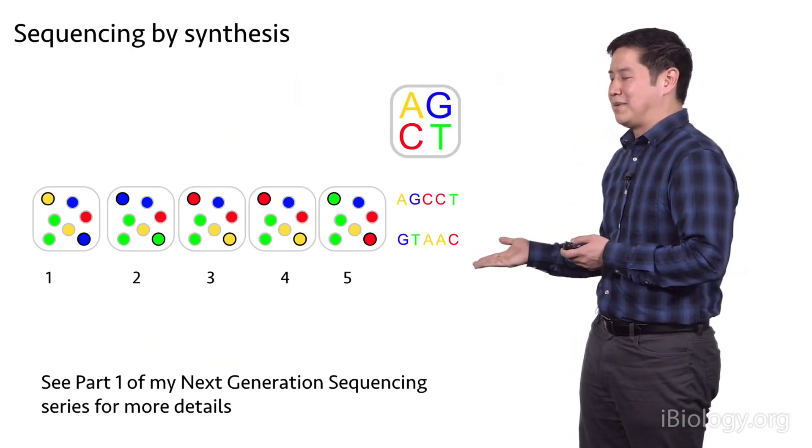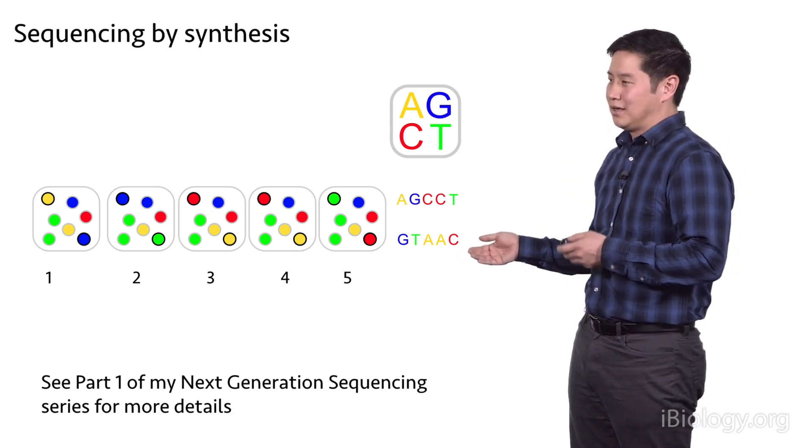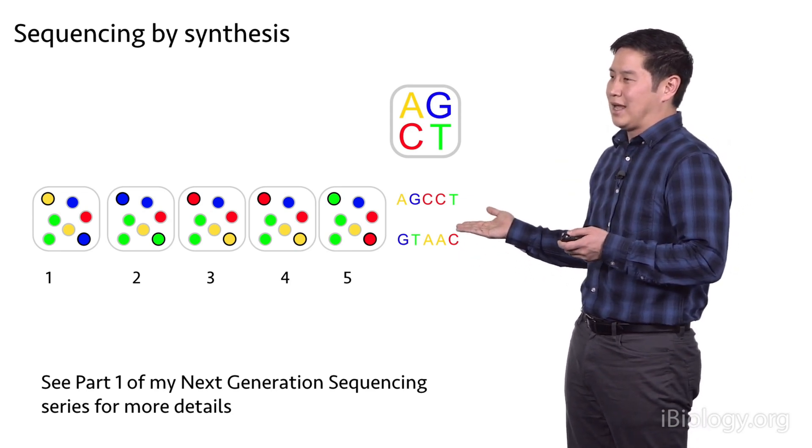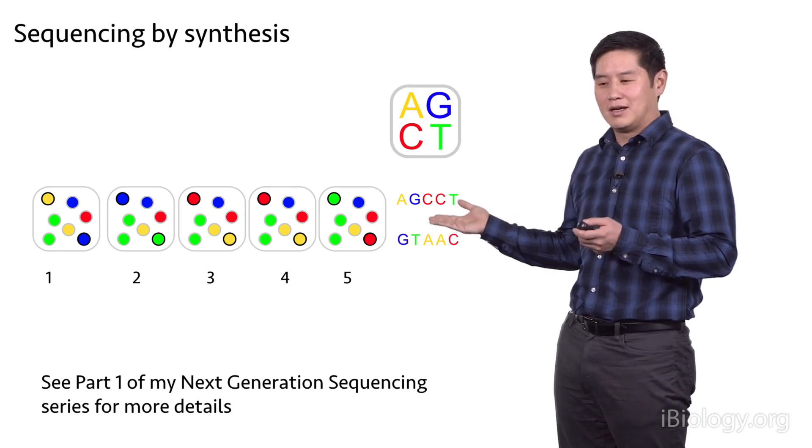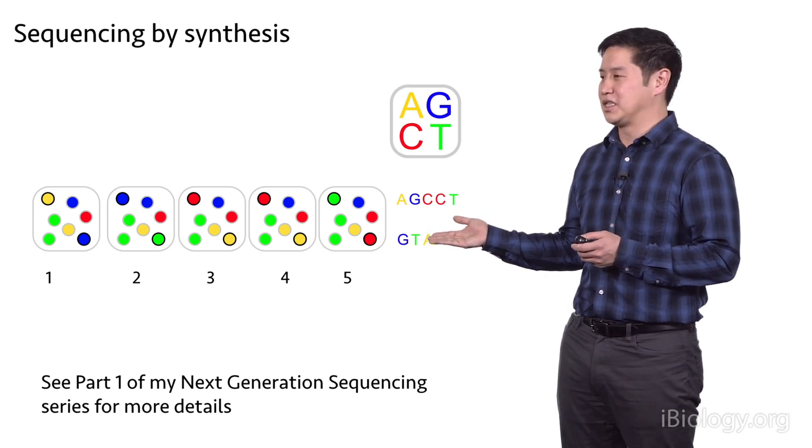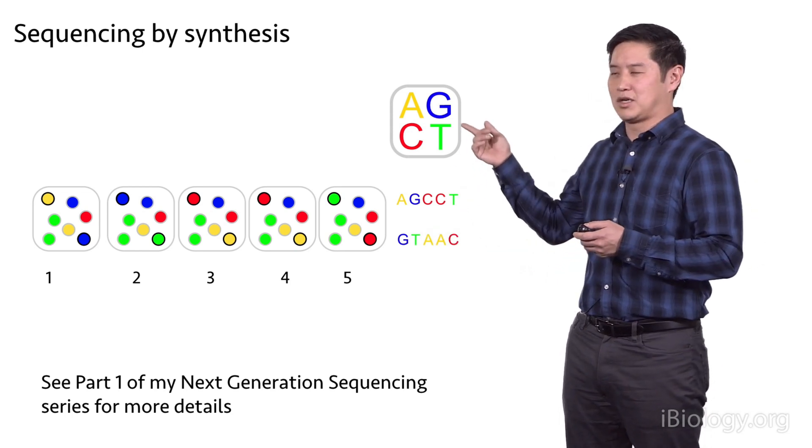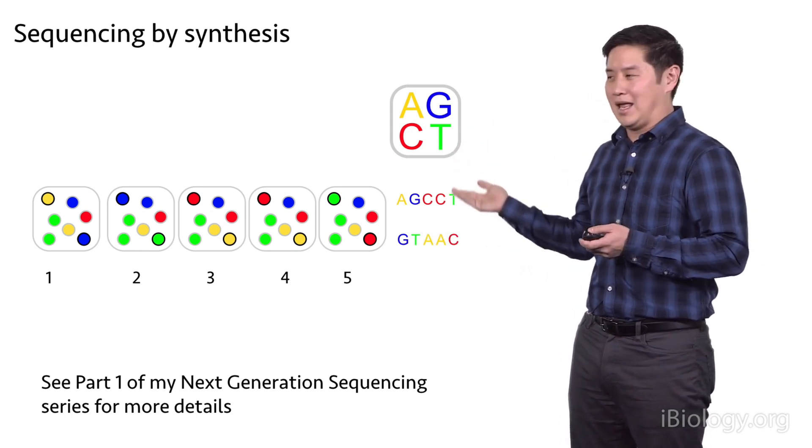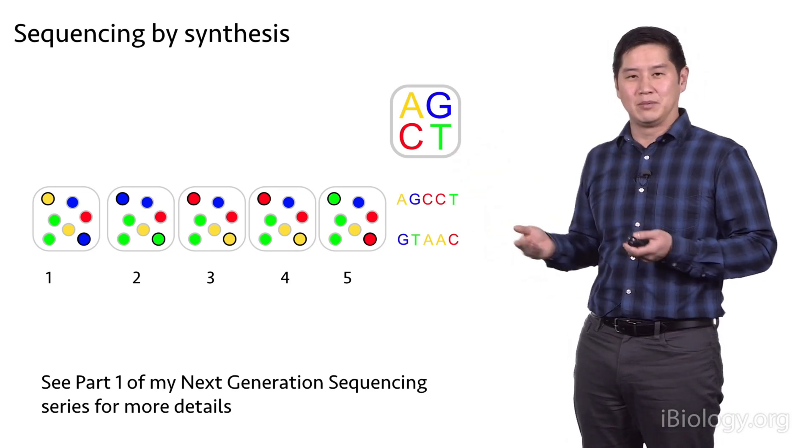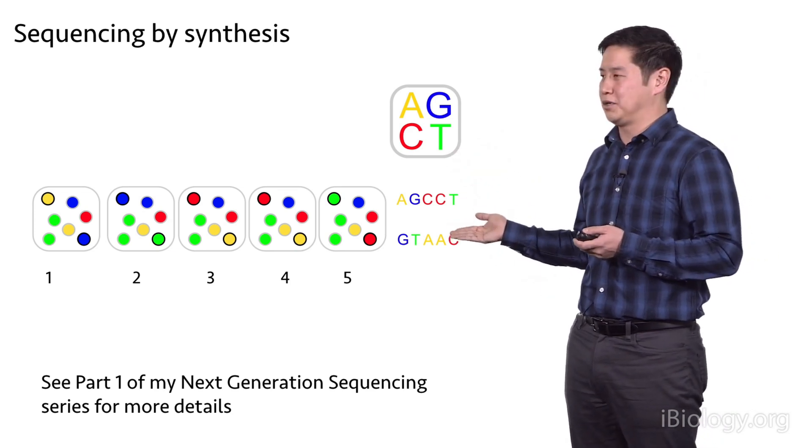Here I'm depicting a schematic of how the sequencing works. If we imagine several different clusters of different molecules on the surface of the flow cell, and we run through the sequencing process where each of the bases are labeled by a different color, and we do this for multiple cycles, we can build up the sequence of each of those individual molecules.